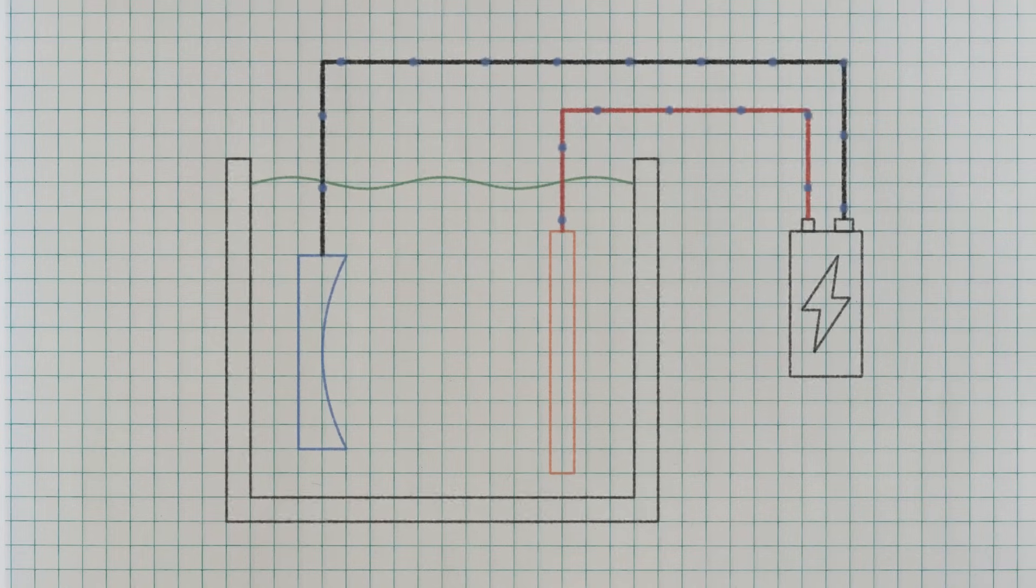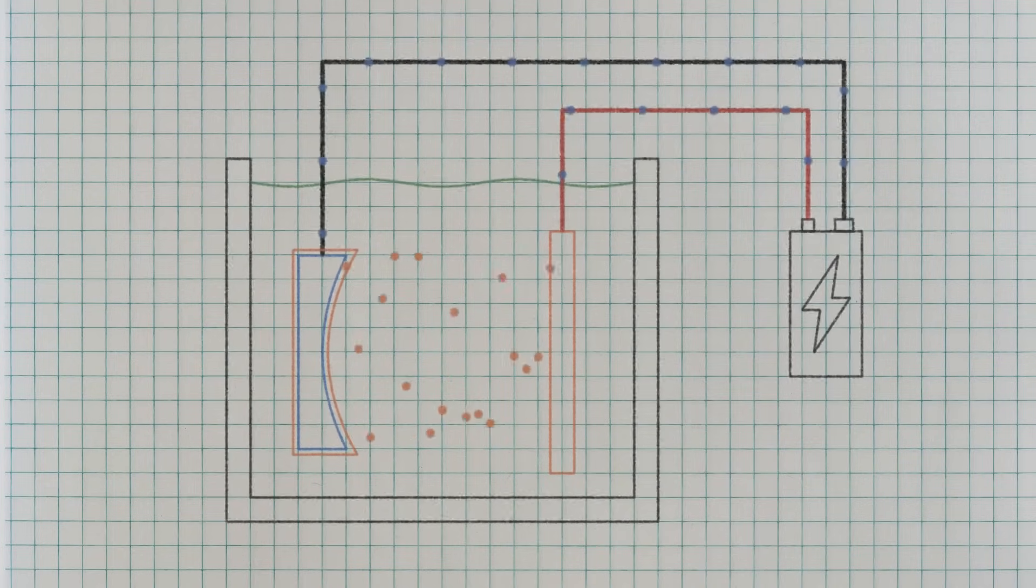Only one problem, though, is the surface the atoms are being moved to has to be conductive, and this resin isn't conductive. So first, I need to coat it in a layer of conductive paint.